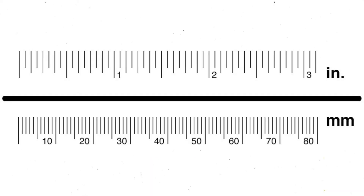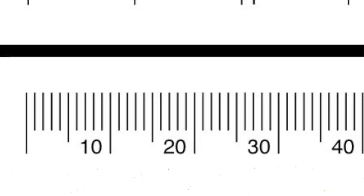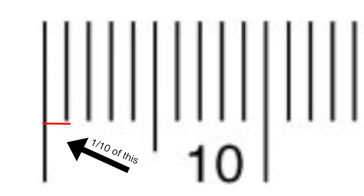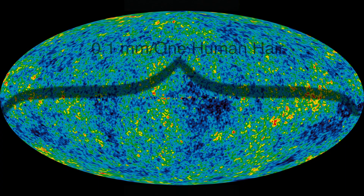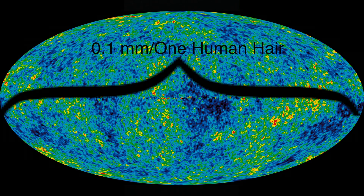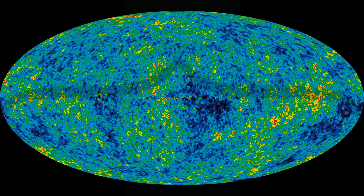The approximate smallest distance an unaided human eye can observe is about 0.1 millimeters. This is about the width of a single human hair. Now, imagine expanding this distance to the size of the observable universe. How big would a Planck length be? Coincidentally, a Planck length would now be 0.1 millimeters long. In other words, the width of a human hair is just as close in size to the observable universe as it is to a Planck length.